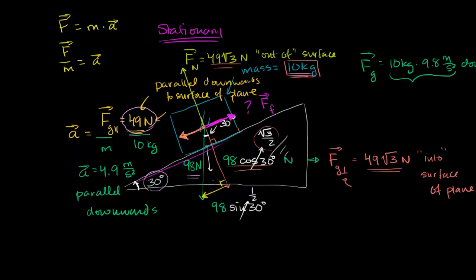The force of friction will always act in a direction opposite to the potential acceleration if there were no friction. So what is the force of friction in this case? If this block is completely stationary and not accelerating down the ramp, the force of friction is going to be 49 newtons acting upwards — up the ramp.